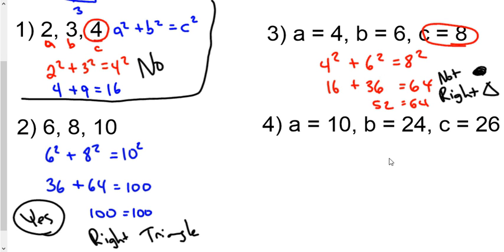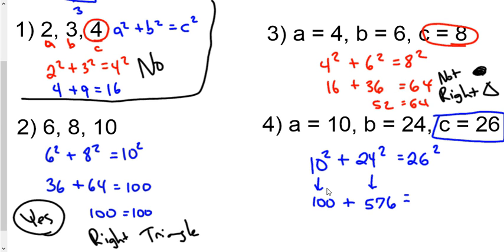And then the very last one, again, they tell us this is C, which is our hypotenuse. These are our legs. The sum of the square of the legs, 10² + 24², would equal the square of the hypotenuse. So we've got the square of the hypotenuse, 26². So 10² becomes 100. 24² becomes 576. And 26² becomes 676. And as you can see, these two definitely do add up to equal 676. So yes, it's a right triangle.